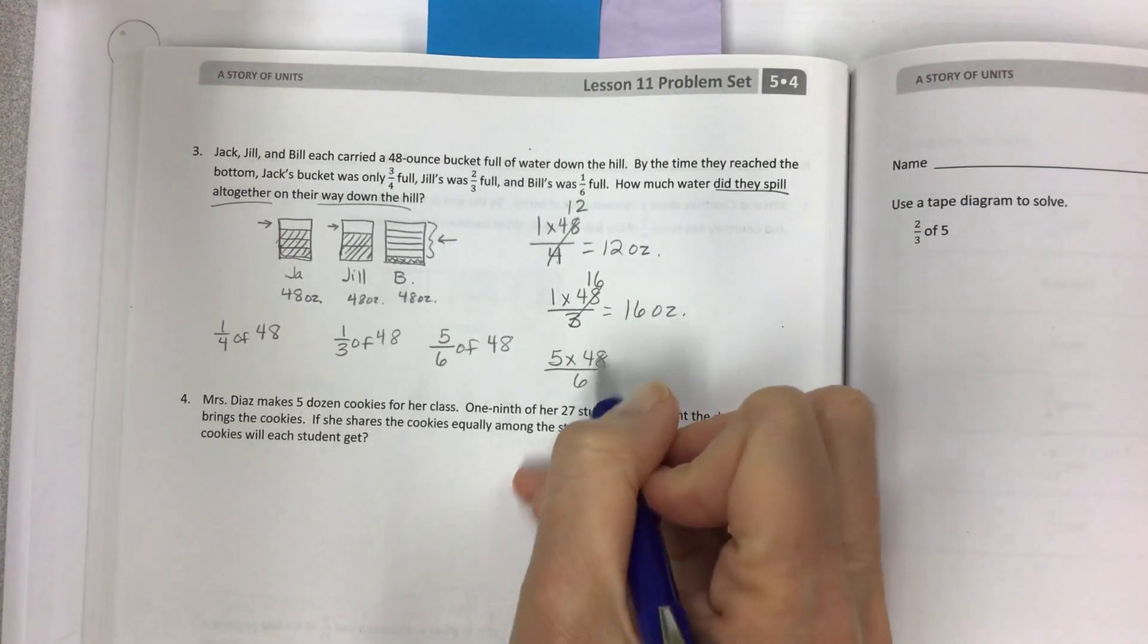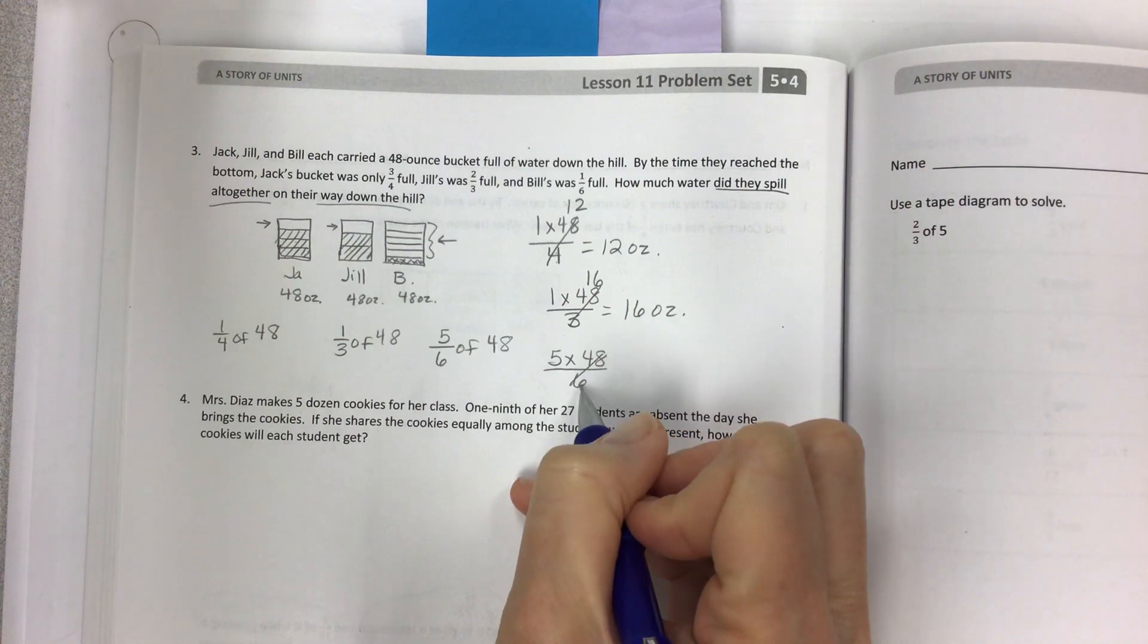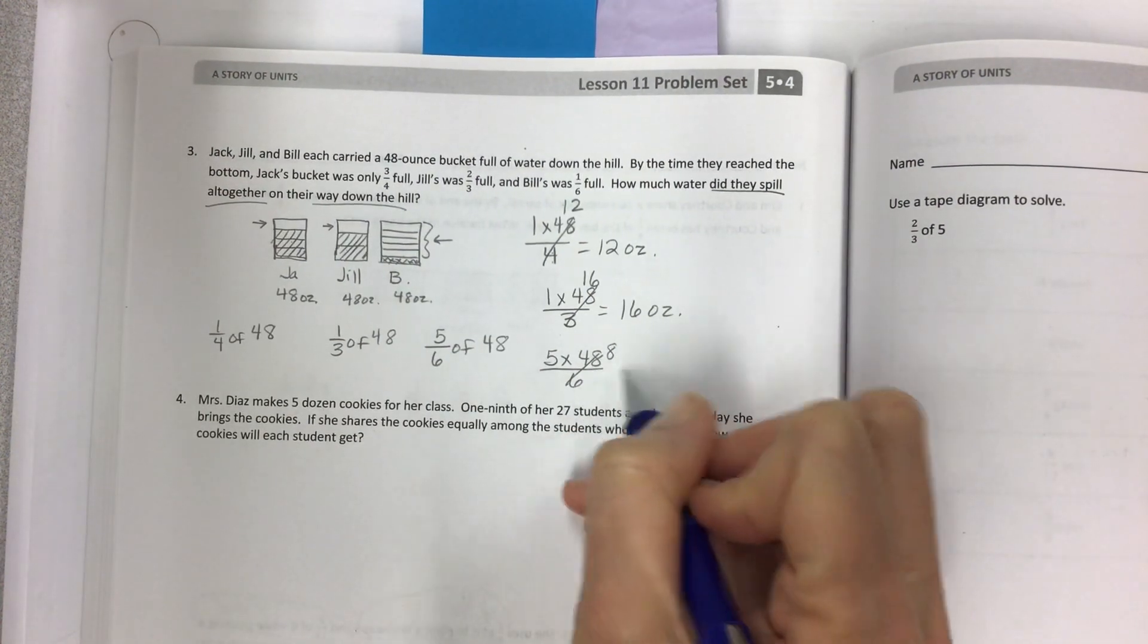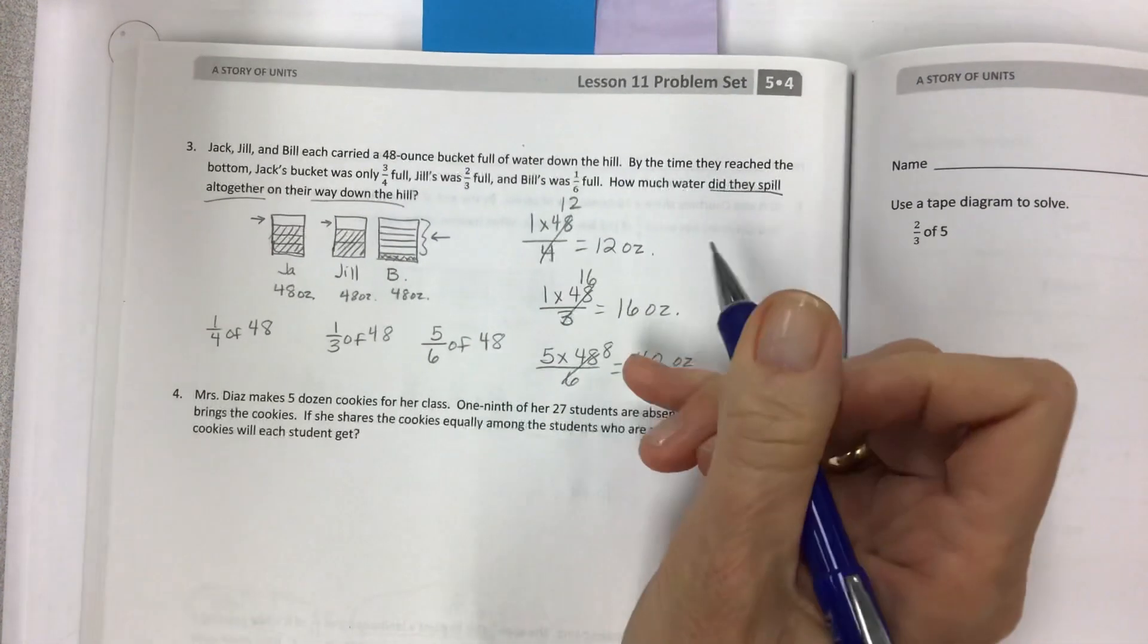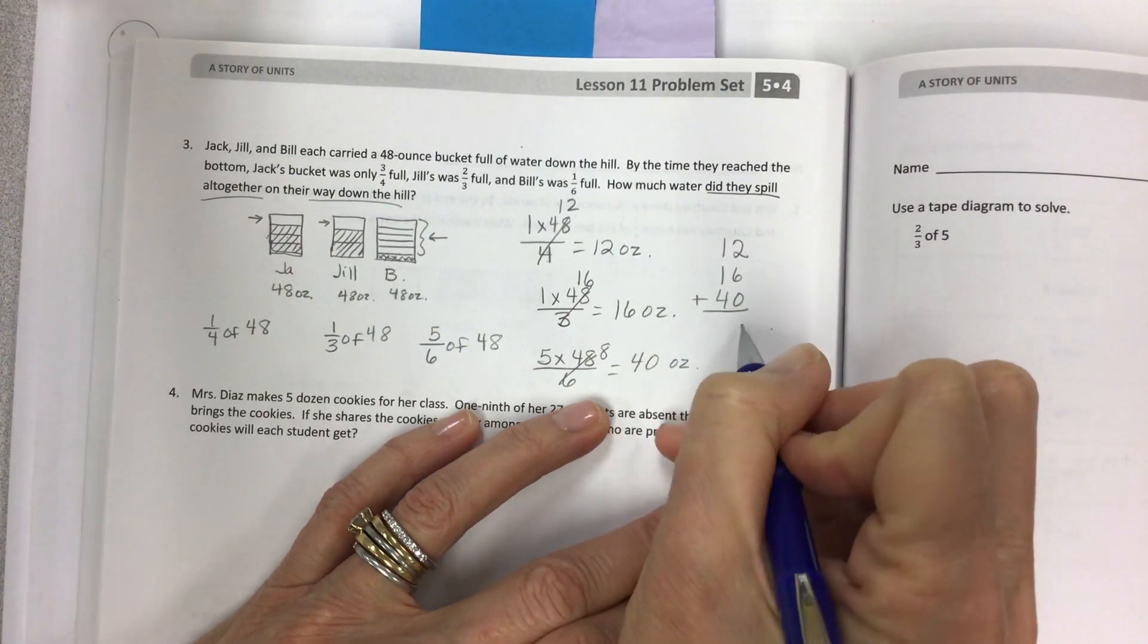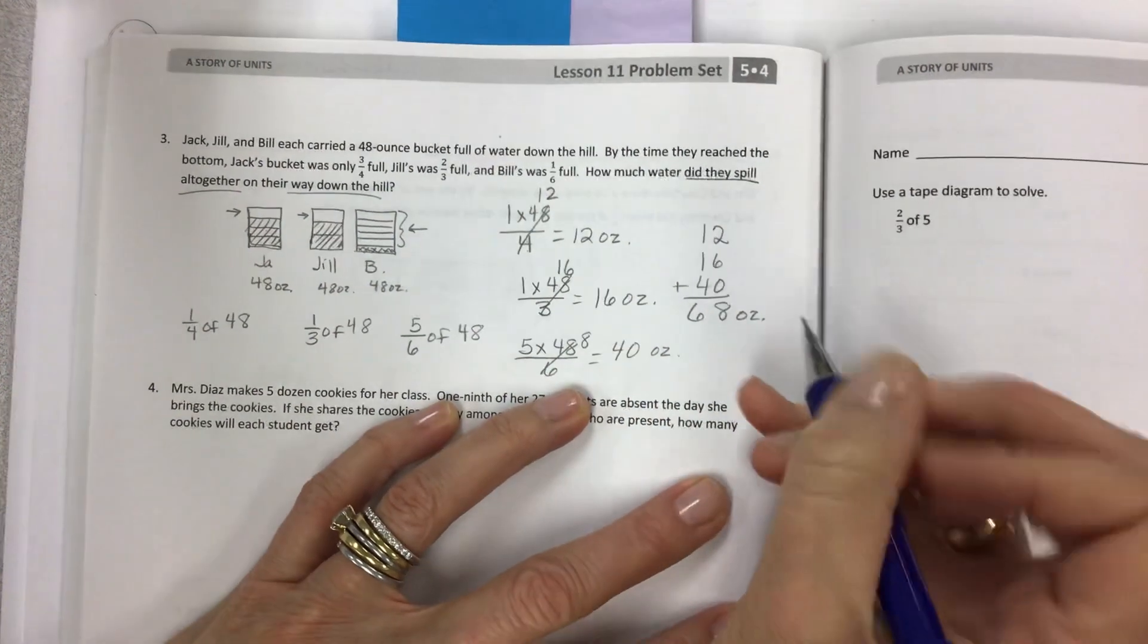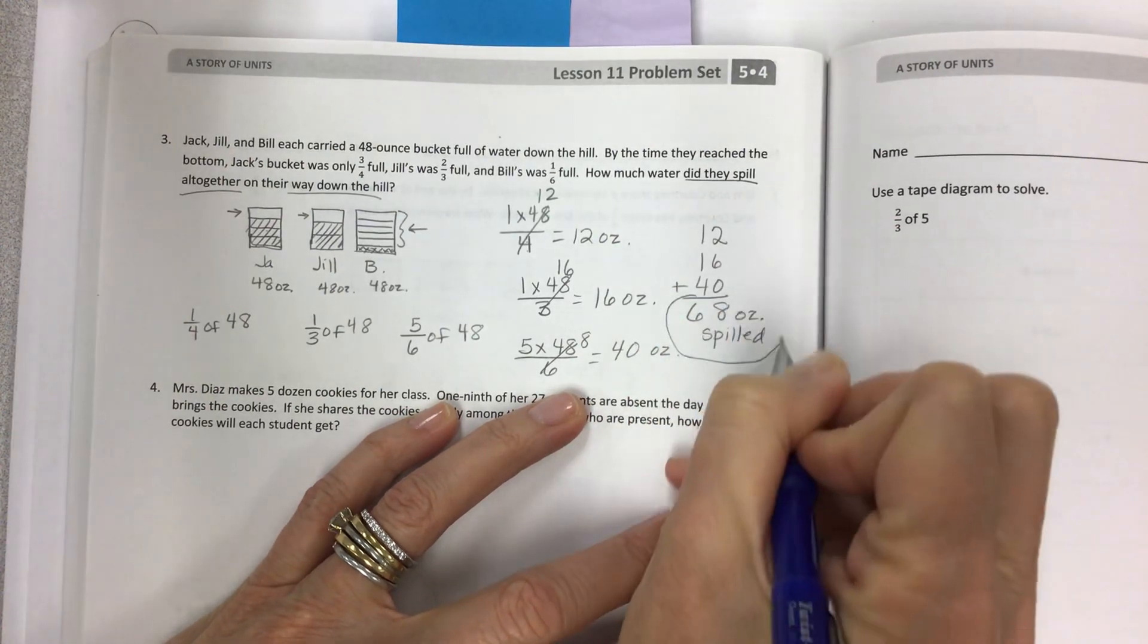Last one is five times 48 over six. Moving this six from five-sixths over to 48-sixths, that makes it real easy because it's eight, because 48 is evenly divisible, which makes 40 ounces. And then you just have to add those numbers together, and they're all whole numbers. So you have 68 ounces spilled.